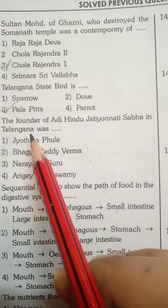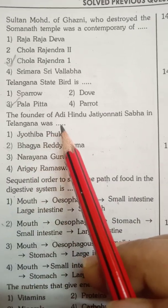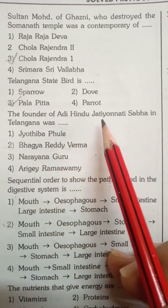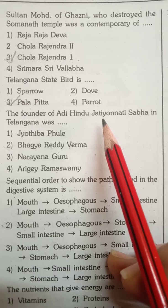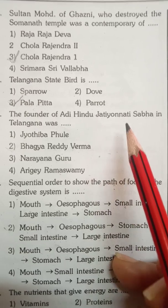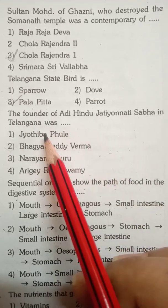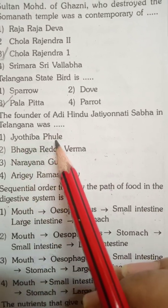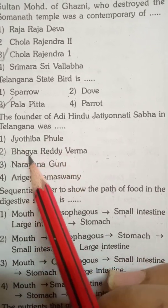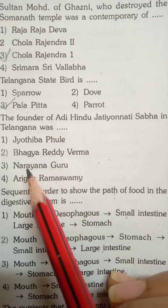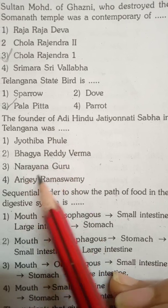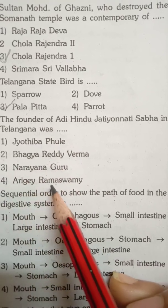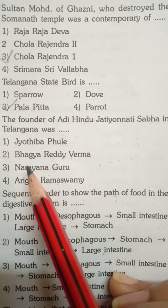The founder of Hindu Jati Yonath Sabha. The options are: Vaseer, Jyothipapulena, Bhagya Reddy, Narayana Guru, and Arijay Ramaswamila.